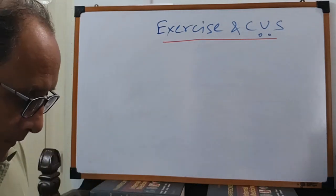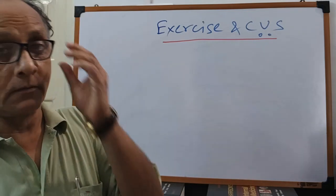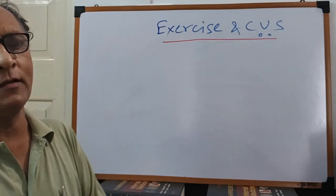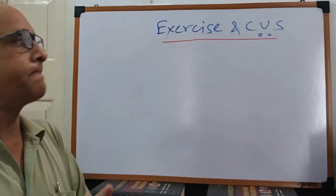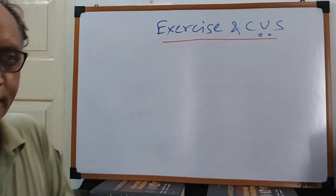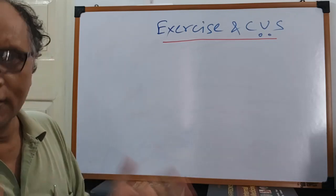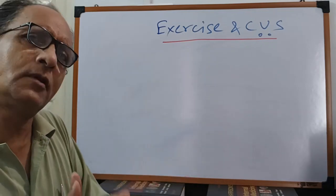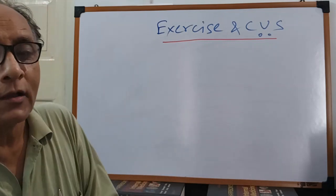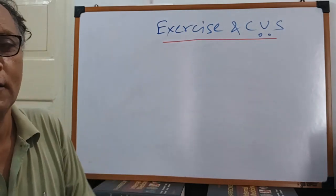Dear students, today's topic, as I have written here, is exercise and cardiovascular system. It is customary to summarize the overall discussion on cardiovascular system with a physiological variation — that is, exercise. For the last 21 classes I have covered, with reasonable detail, the whole of the cardiovascular system. Today I am going to summarize some part of it, utilizing a standard physiological variation known as exercise.